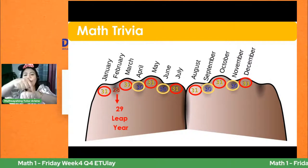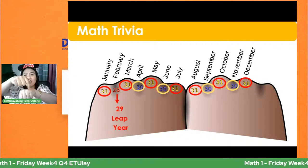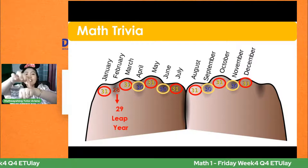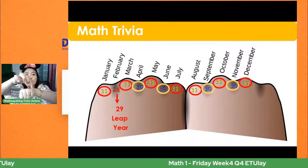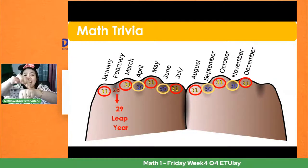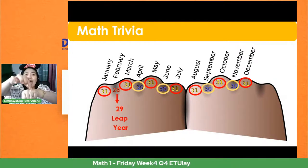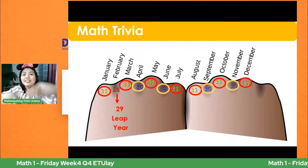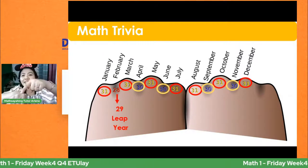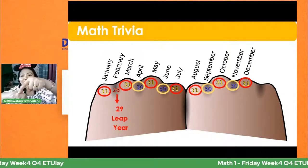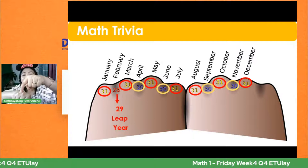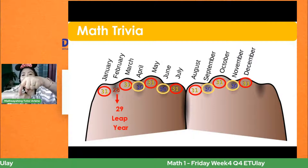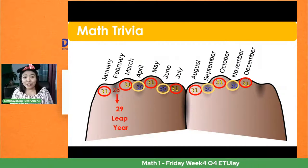31, 30, 31 — blank tawa natin isa — 31, blank, 31, 30, 31, 30, 31, 31, 30, 31, 30, 31.